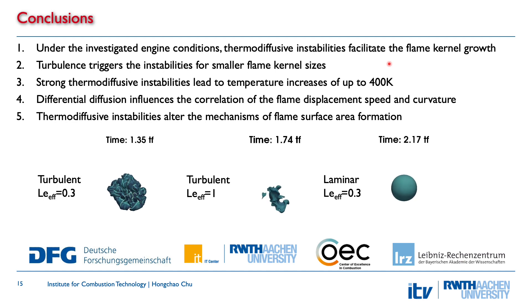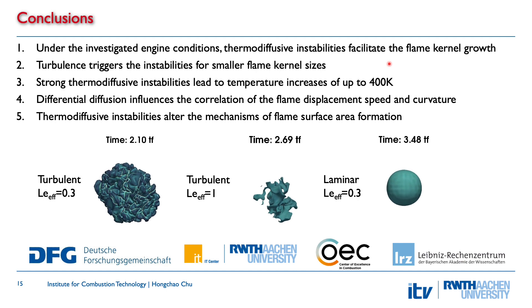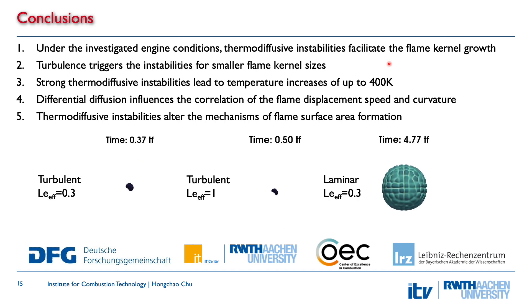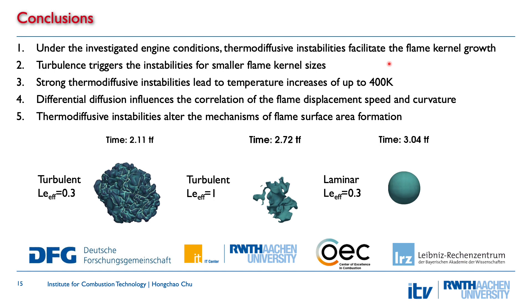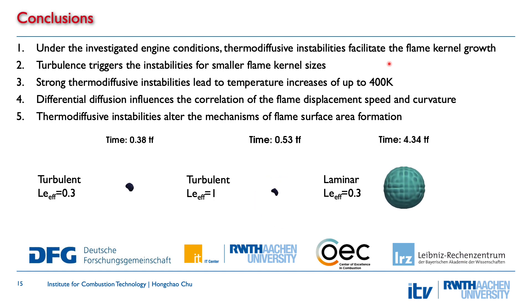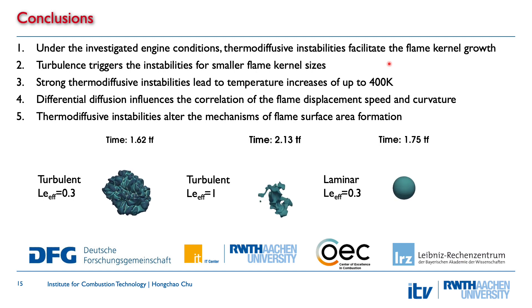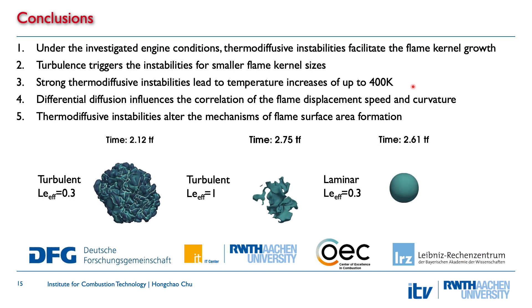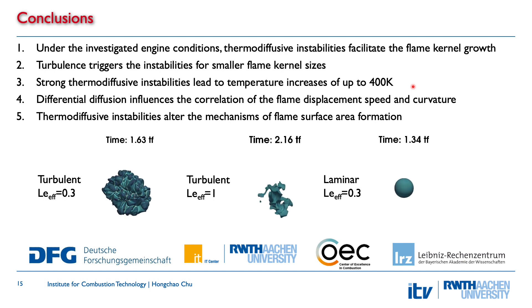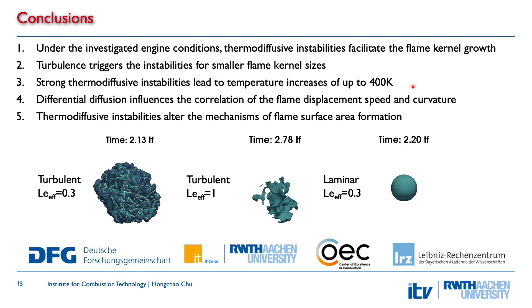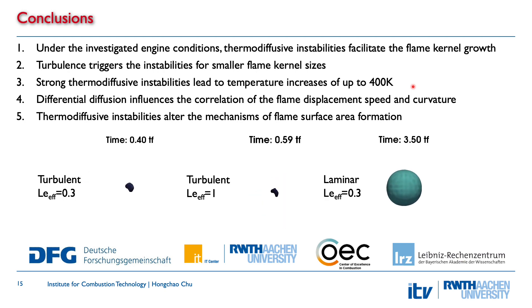Under the investigated engine conditions, thermodiffusive instabilities facilitate flame kernel growth. Turbulence triggers the instabilities for smaller flame kernel sizes. Strong thermodiffusive instabilities lead to temperature increases of up to 400 K. Differential diffusion influences the correlation of flame displacement speed and curvature. Thermodiffusive instabilities alter the mechanisms of flame surface area formation. Thank you very much for your attention.